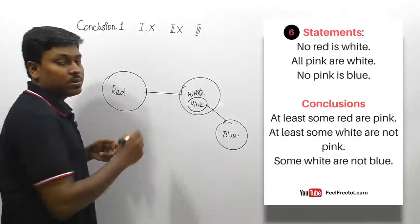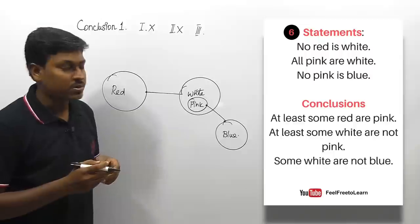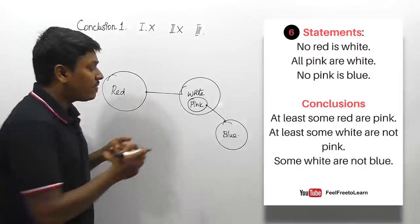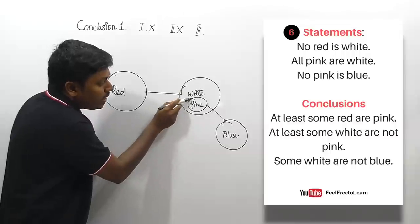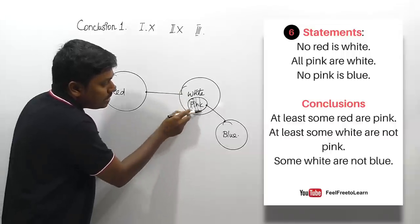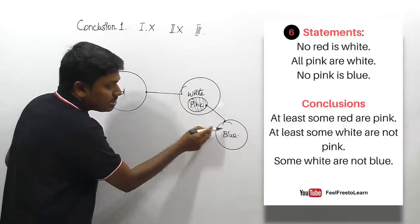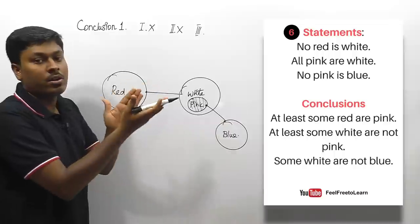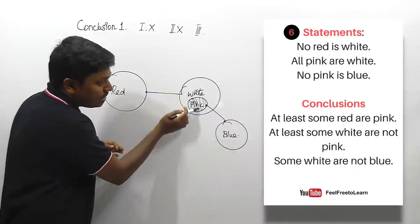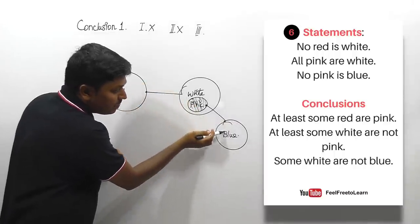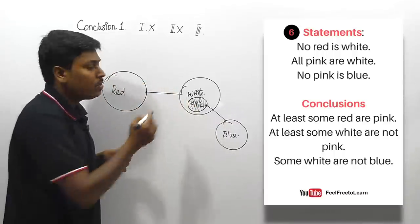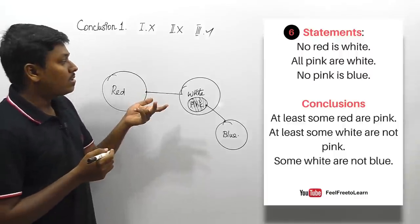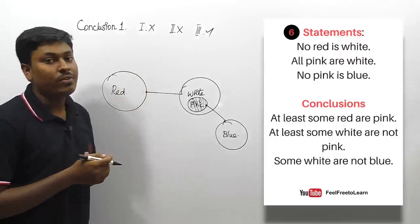Conclusion three: 'some white are not blue.' Some white will be this region, and they are saying this region is not blue — which is exactly correct. Some white will be this region and this region is definitely not blue. So conclusion three follows, and for this question the answer is three follows.